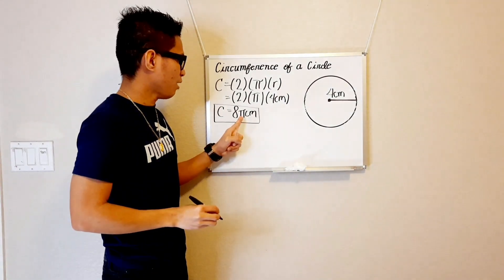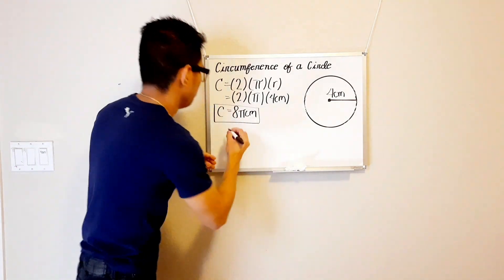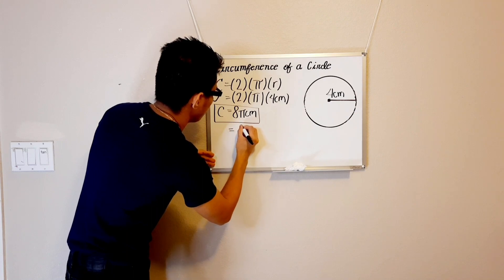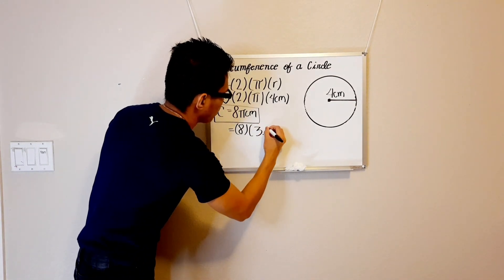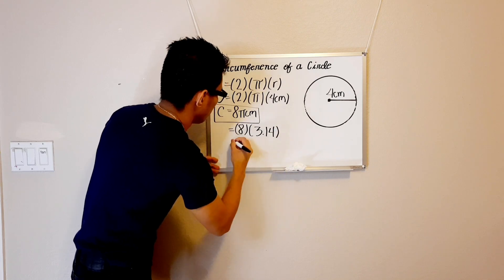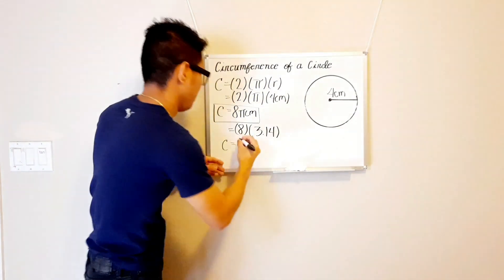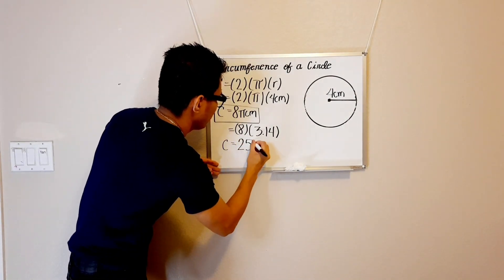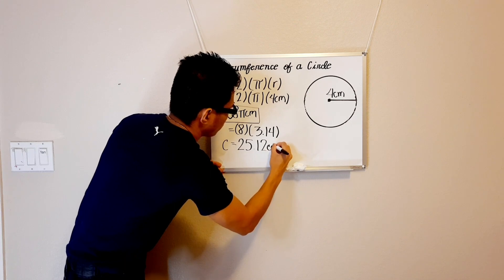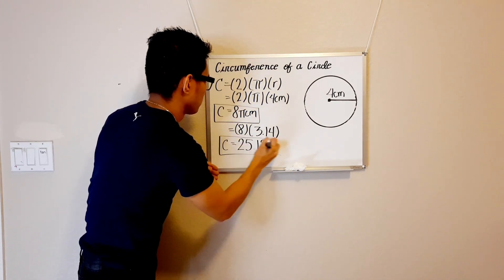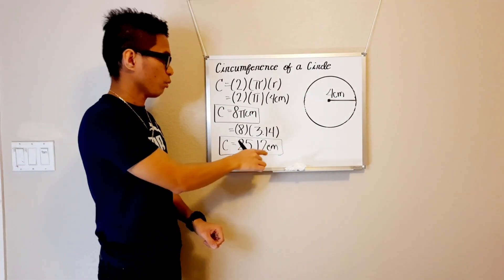And remember that the value of our pi is still 3.14. And we can multiply our pi by 8 centimeters. So 8 times 3.14 will give us the same answer as our first example. And the circumference of our circle is 25.12 centimeters.